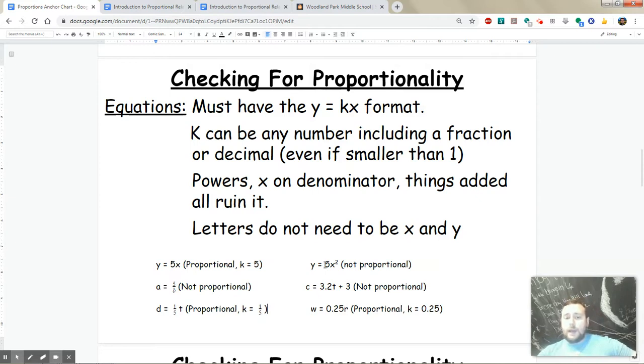How about y equals 5x squared? It's not proportional because you have that x squared. And how about c equals 3.2t plus 3? It's not proportional because of the plus 3 being added. That doesn't work.